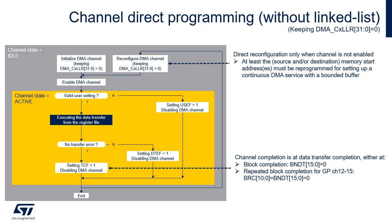Channel transfer completes when bits 15 to 0 of BNDT become equal to 0, which is the block number of data bytes to transfer from the source. For channels 12 to 15 of GPDMA, the channel transfer completes when both the block repeat counter and the block number of data bytes to transfer become equal to 0. A channel reconfiguration is possible only when the channel is disabled.